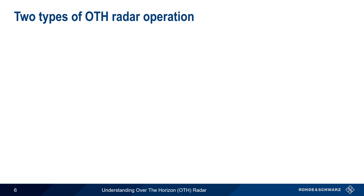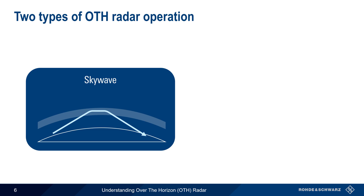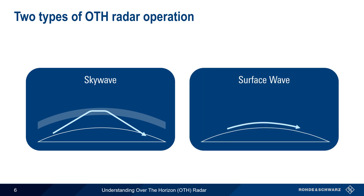OTH radars can be generally divided into skywave radars and surface wave radars. Both use HF frequencies, but have somewhat different characteristics due to their different propagation modes. Let's look at each of these, starting with skywave.